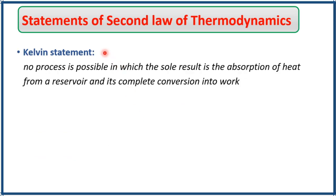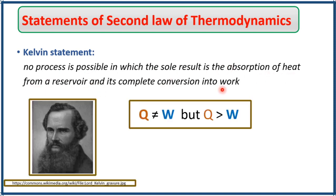The second statement is the Kelvin statement: no process is possible in which the sole result is the absorption of heat from a reservoir and its complete conversion into work. This means you cannot completely convert Q into W — you cannot utilize the total amount of heat absorbed entirely to do work. Q is always greater than W; you cannot 100% convert Q into W.